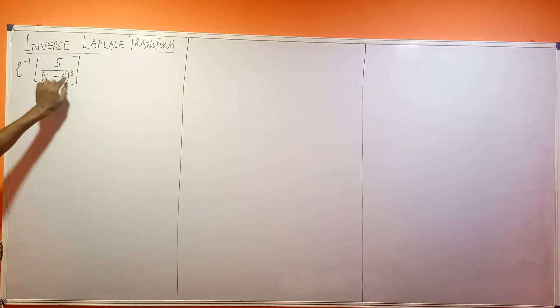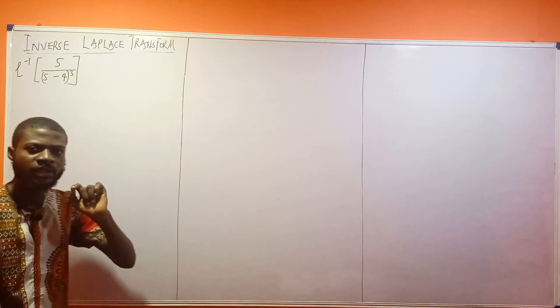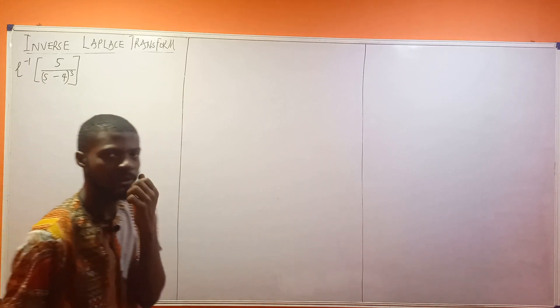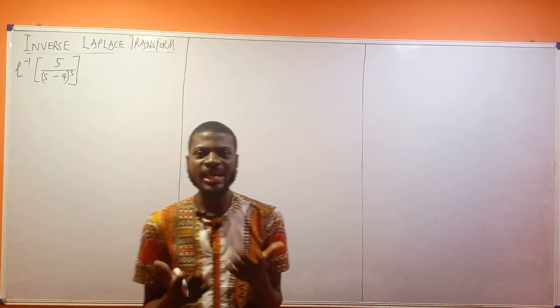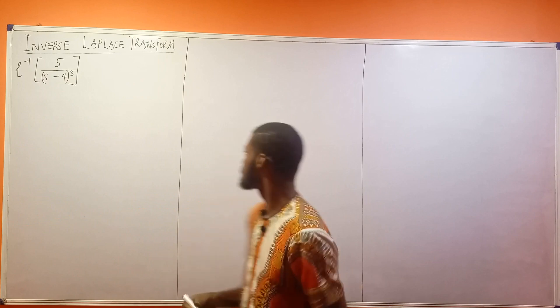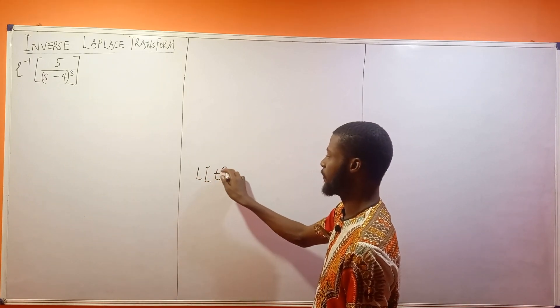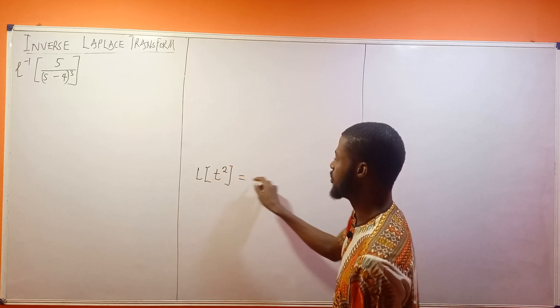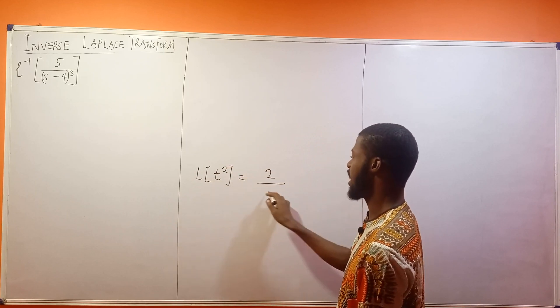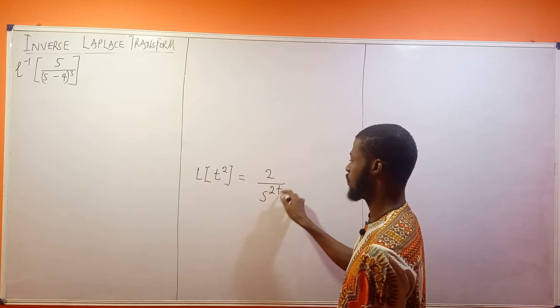Now, 5 over (S-4)³. If you think properly, something has been done here. They've replaced S with something else. Remember that the Laplace transform of t², if you can remember, is going to give you 2 over S³ (that's S to the power of 2 plus 1).